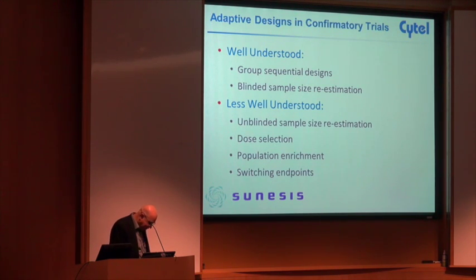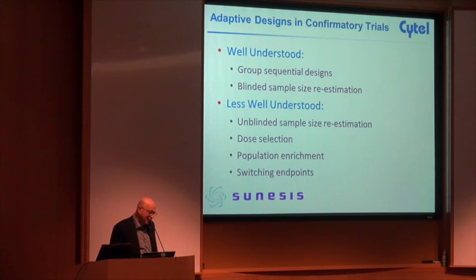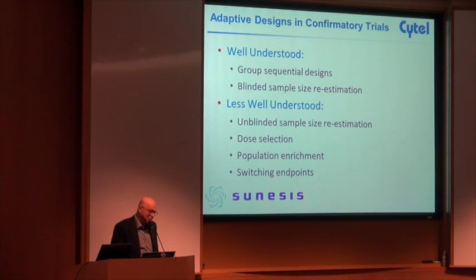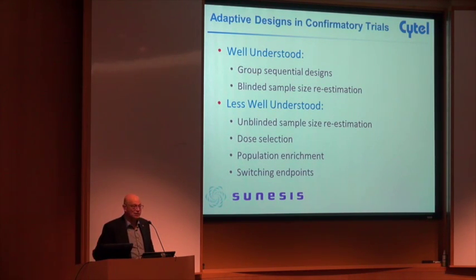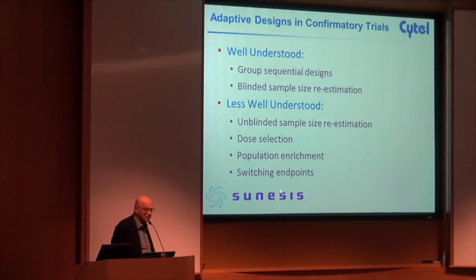In a safety study, you're trying to show non-inferiority to MACE events, to cardiovascular risk. At an interim analysis, if you know that you're going to get non-inferiority, you have a choice: you could take the non-inferiority, or you could continue on, maybe even increase the number of events, and try for superiority. That's what I mean by switching endpoints, and that is a possibility.